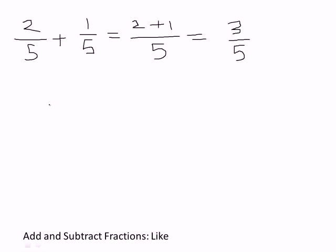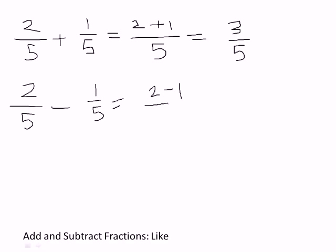Now let's do a subtraction example. 2 fifths minus 1 fifth. We check — the denominators are the same — so we take the two numerators and the operator, either plus or minus, and put it over the denominator. That equals 2 minus 1, which is 1 fifth. So adding and subtracting like fractions is straightforward — that's the easy one.